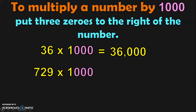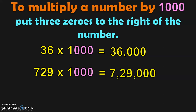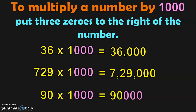Next, we have a 3-digit number: 729 multiplied by 1,000. Write down 729 followed by three zeros. This is a 6-digit number — reading it as 7,29,000. So, 729 multiplied by 1,000 gives you 7,29,000. Next, 90 into 1,000 — write down 90 followed by three zeros. It becomes a 5-digit number: 90,000.